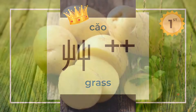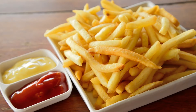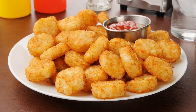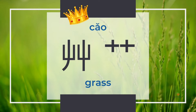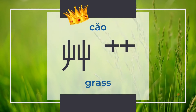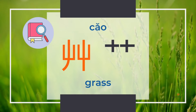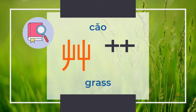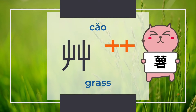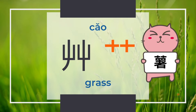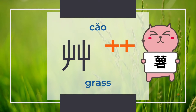Next we'll learn about potatoes, sweet potatoes, french fries, and hash browns. 草 means grass and is a pictogram with two forms. In the dictionary it appears as two tridents, but in Chinese characters 草 changes to two tiny crosses appearing on the top of the characters.